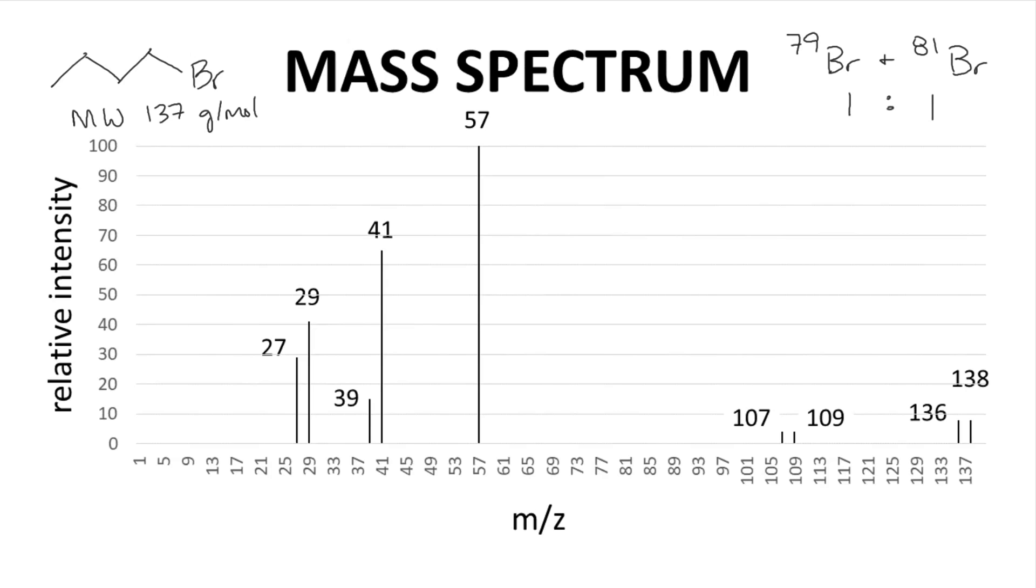Now some parent ions for 1-bromobutane have the isotope bromine-79 and a nominal mass of 136. Other parent ions have bromine-81 and give an m/z value of 138. And those peaks have a roughly 1 to 1 ratio.